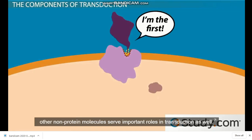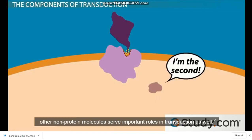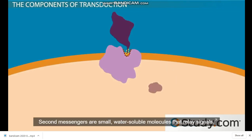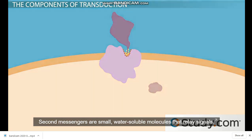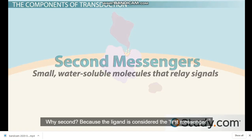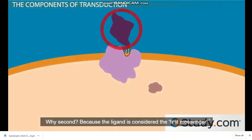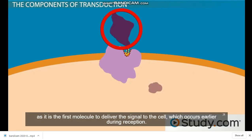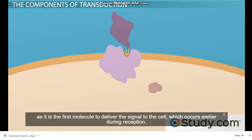Second messengers are small, water-soluble molecules that relay signals. Why second? Because the ligand is considered the first messenger — it is the first molecule to deliver the signal to the cell, which occurs earlier during reception.